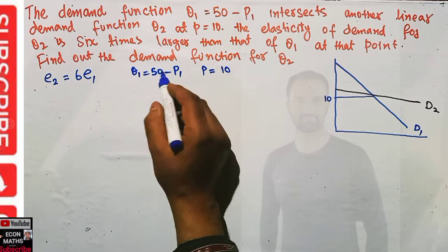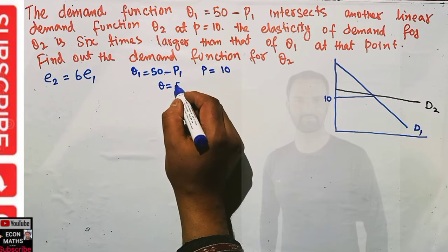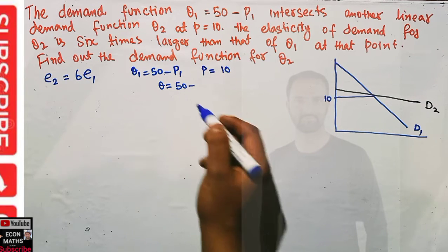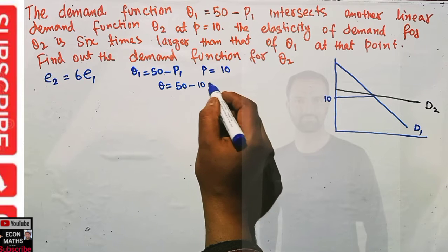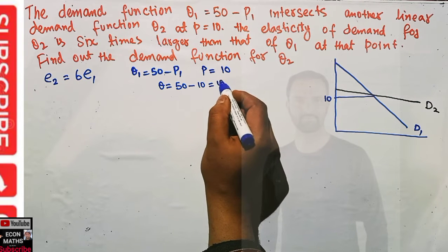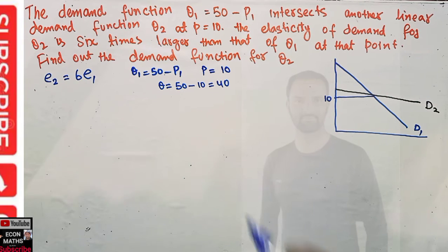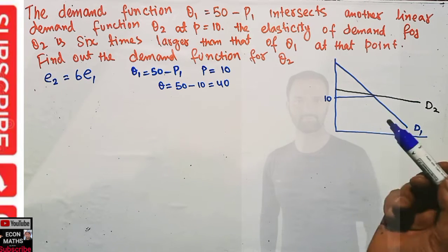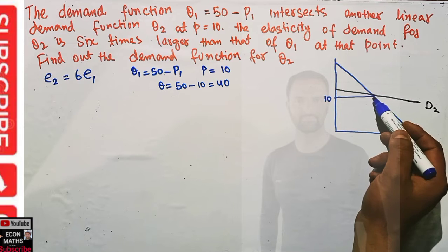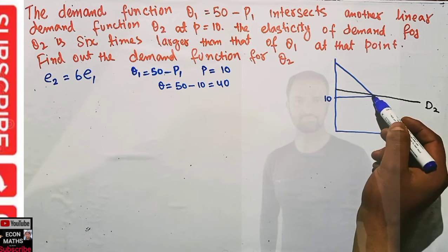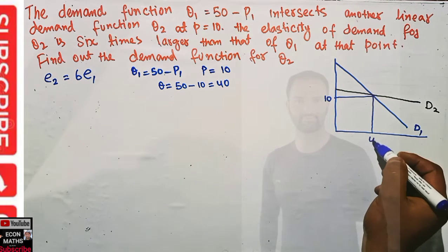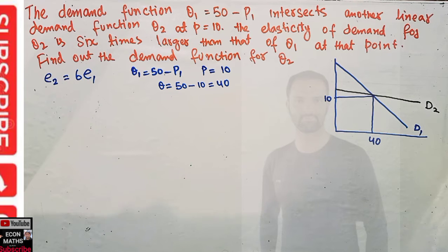What will q be at p equal to 10? We just plug p equal to 10 into q1: q = 50 minus 10, which comes out to be 40. That means when the two demand functions intersect each other, price is 10 and quantity is 40.